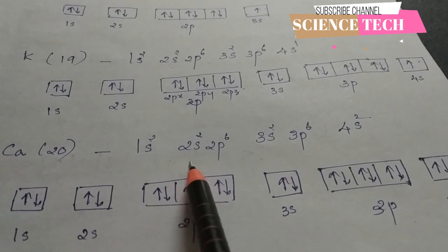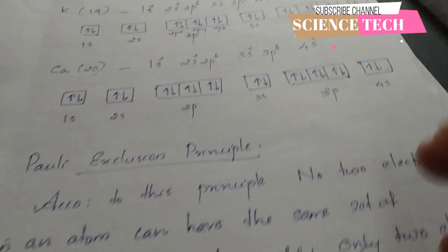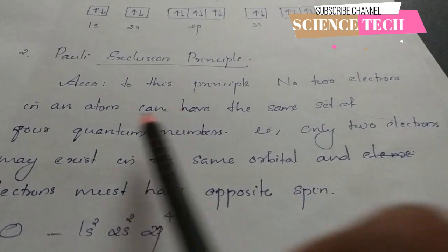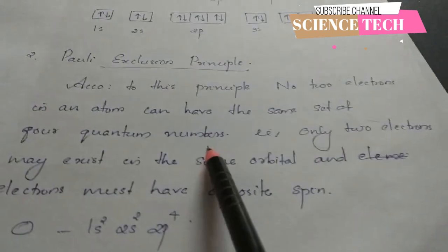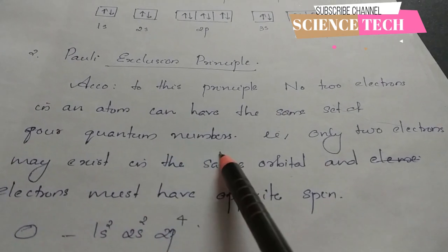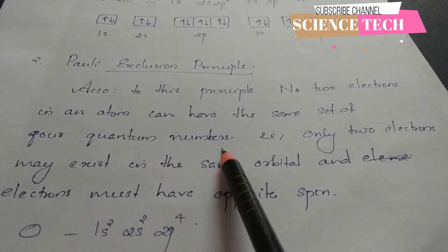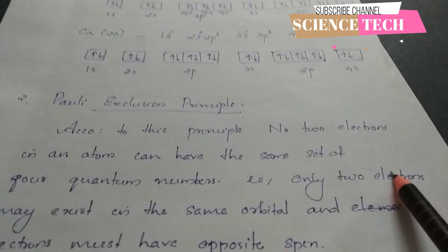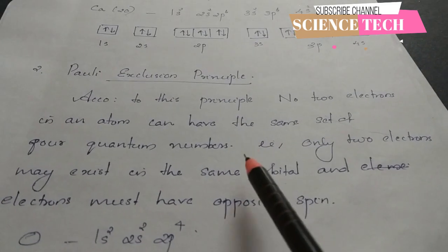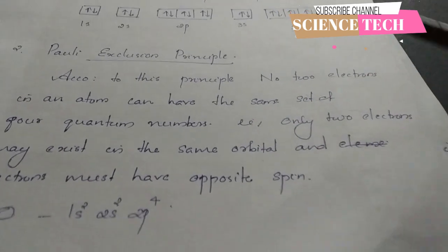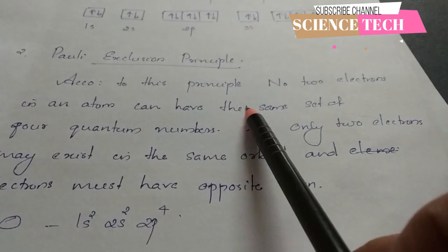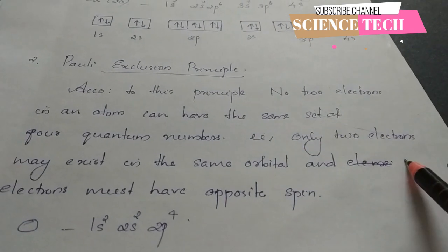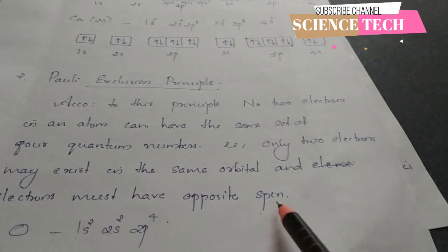Calcium's configuration is 1s2, 2s2, 2p6, 3s2, 3p6, 4s2. The Pauli exclusion principle states that no two electrons in an atom can have the same set of four quantum numbers. Only two electrons can exist in the same orbital, and they must have opposite spin.